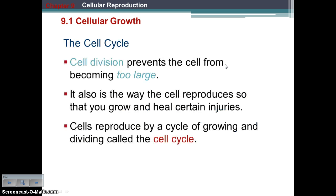That's where the cell cycle or cell division process comes in. Ultimately, cell division prevents the cell from becoming too large. It's also the way that the cell reproduces so that you can grow, getting more and more cells, and as you heal injuries. If you get a cut on your arm, you need to replace those skin cells by making more skin cells. Cells reproduce by a cycle of growing and dividing called the cell cycle.